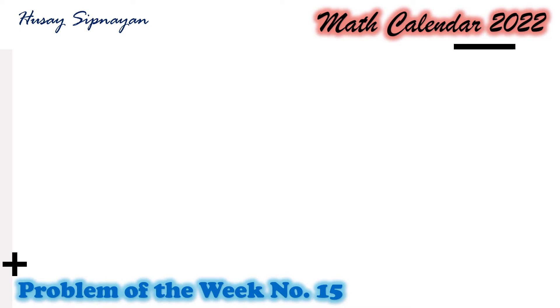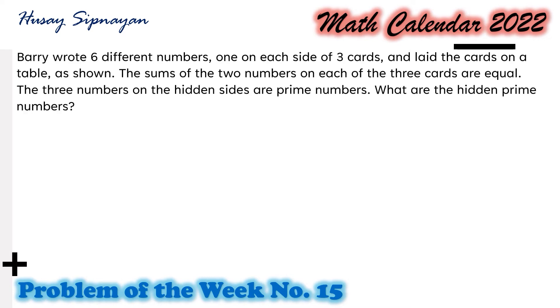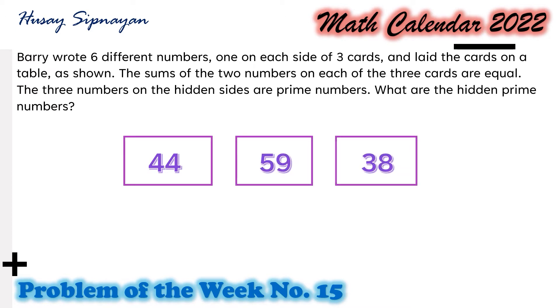Here now is our featured problem for Week 15. Barry wrote six different numbers, one on each side of three cards, and laid the cards on a table as shown. The sums of the two numbers on each of the three cards are equal. The three numbers on the hidden sides are prime numbers. What are the hidden prime numbers? This question is part of the Math Awareness Month competition in 2013.